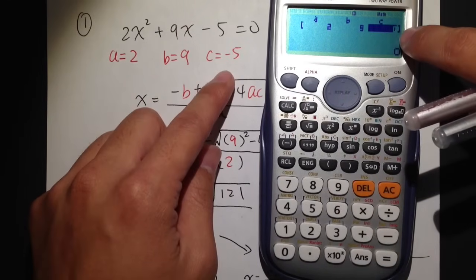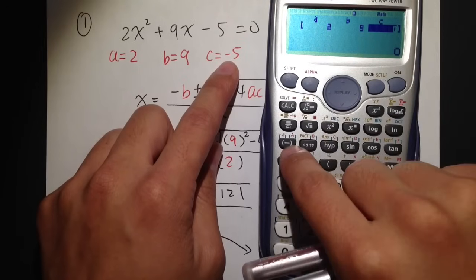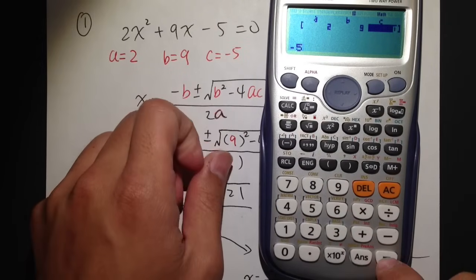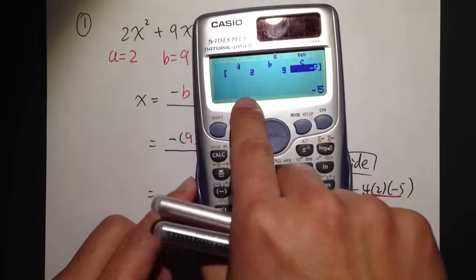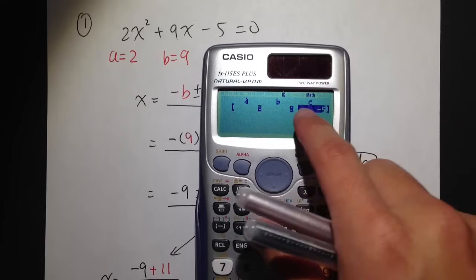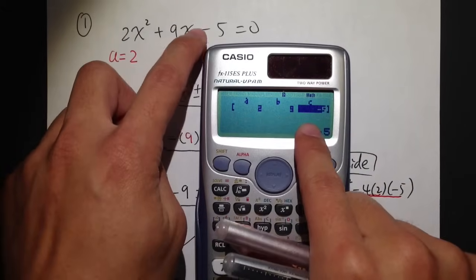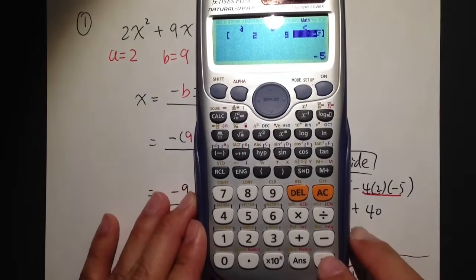And we just need to fill in what's the value of C. C is negative 5. So I will put this for the negative sign, negative, and then 5, equals to. Once we have entered all this, we are telling the calculator that we are trying to solve this equation: 2x squared plus 9x minus 5 is equal to 0. Then we just need to hit equal.